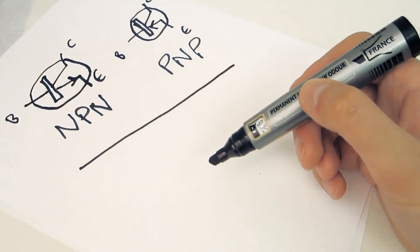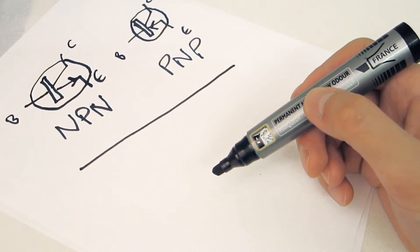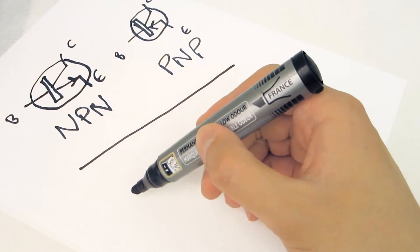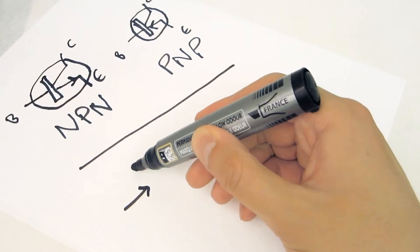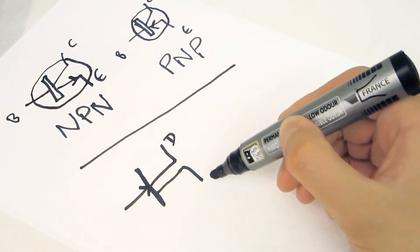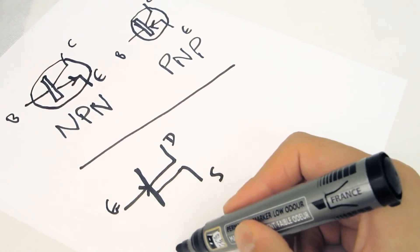And with FETs we also have two different types. Remember FETs are unipolar, they're not bipolar. So we have N channel, which looks like this. We have the drain, the source, and the gate. This is an N channel.